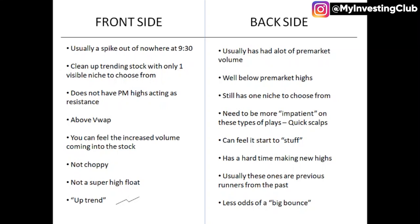So the front side. This front side and backside chart was developed purely for first bounces. There are going to be some variations for different setups, but this covers a front side first bounce and a backside first bounce type of move. Usually on the front side, we get a spike out of nowhere at 9:30 — usually there's no volume traded further on the day, just a big spike up. The second type of first bounce is a clean uptrending stock with one visible niche to choose from, uptrending in pre-market. If it's uptrending, usually after the open it's a grinder — I usually don't like those types of patterns.